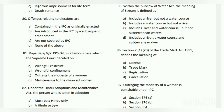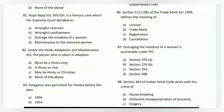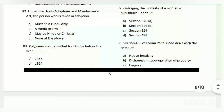Question number eighty: offenses relating to elections are introduced in the IPC by a subsequent amendment, and B is the answer. Question number eighty-one: Rupa Bajaj versus KPS Gill is a famous case which the Supreme Court decided on what? The answer is C - outraging the modesty of a woman.